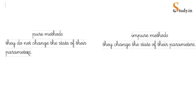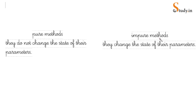Pure methods do not change the state of their parameters, whereas impure methods do change the state of their parameters.